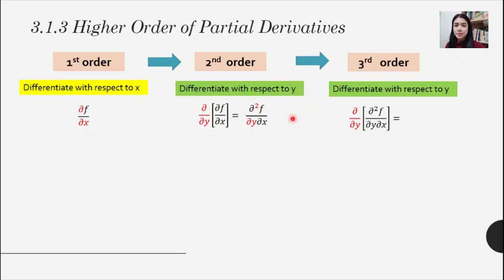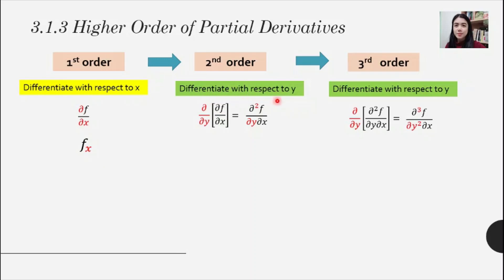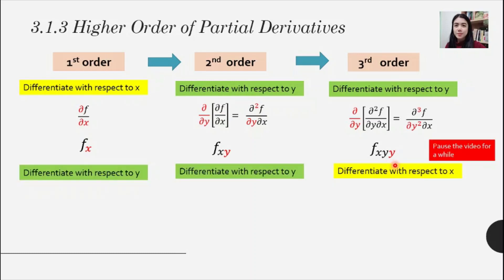For the third order, differentiate with respect to y again. Take the answer of the second order, put it inside the bracket, apply ∂/∂y. You can rewrite it as ∂³f/∂y²∂x — because ∂y·∂y rewrites as ∂y². In the subscript notation: first order is fx, second order is fxy, and third order is fxyy. Pause the video and try to find this partial derivative yourself.